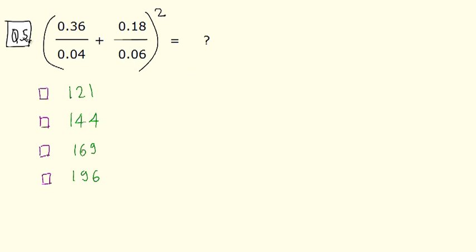Now let us solve the final question of this video. So whenever you have such situation where the numerator and the denominator have equal number of digits on the right hand side of the decimal point, you can just write them without the decimal points. So this becomes 36 by 4 plus 18 by 6 to the whole square and these two terms have exactly the same value. So we can solve this.